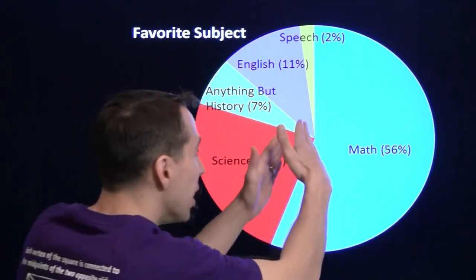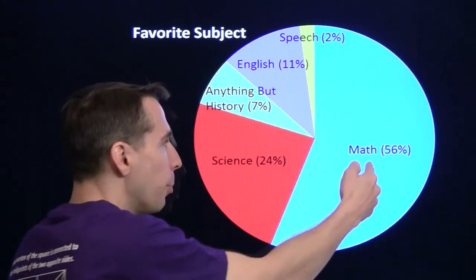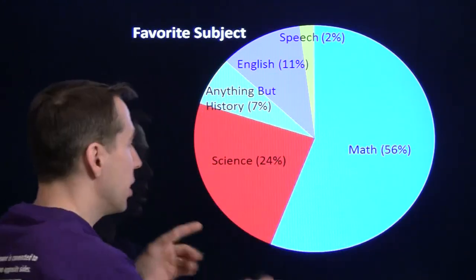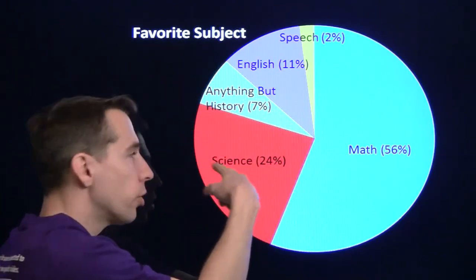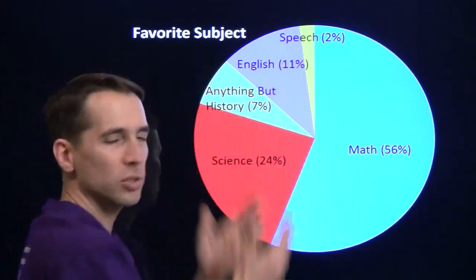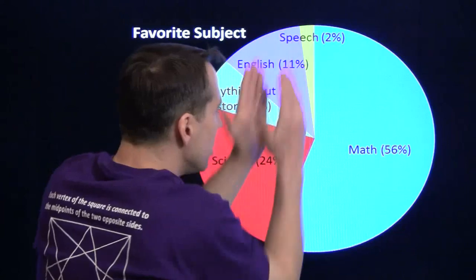56% said math. Slightly more than half the pie is the math slice. 24% said science. Slightly less than a quarter of the pie is science. And same for these. Speech, almost no one said speech. It's a little tiny sliver.